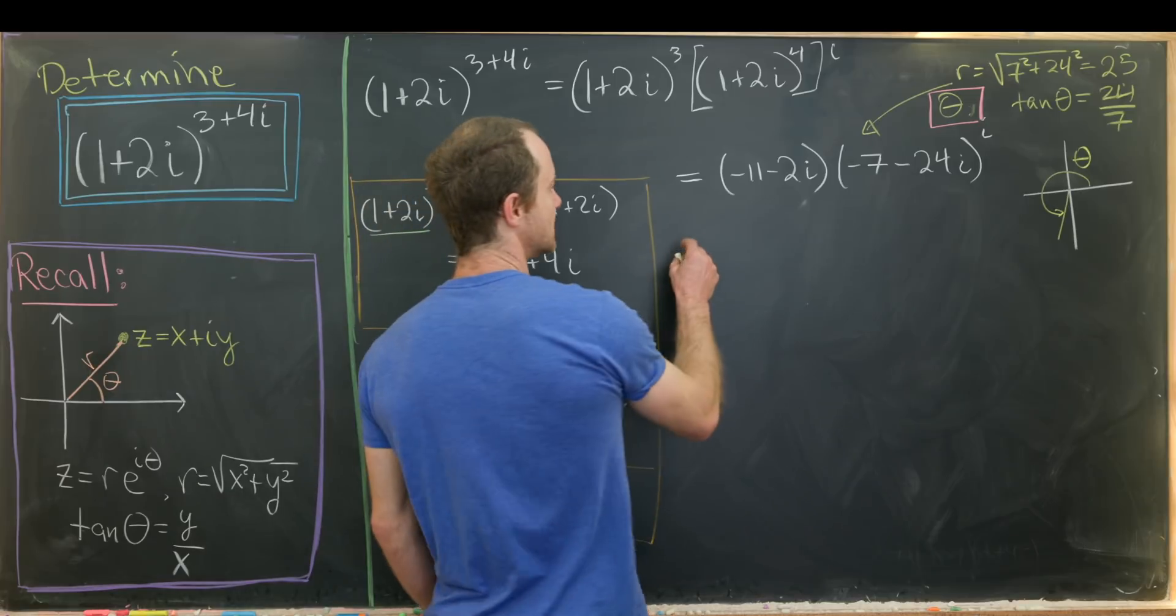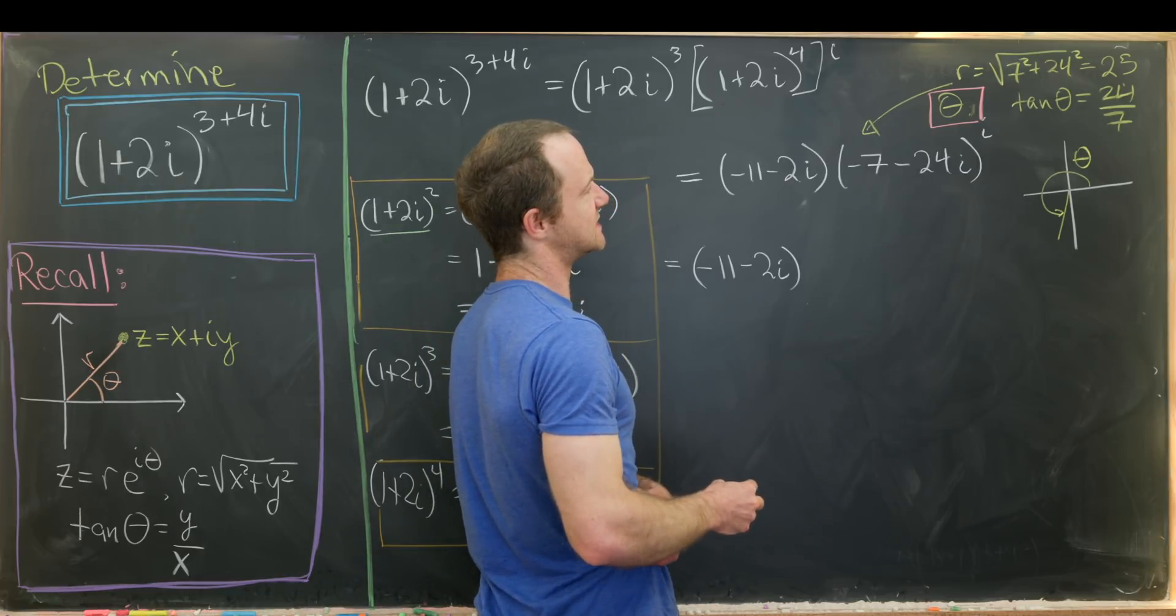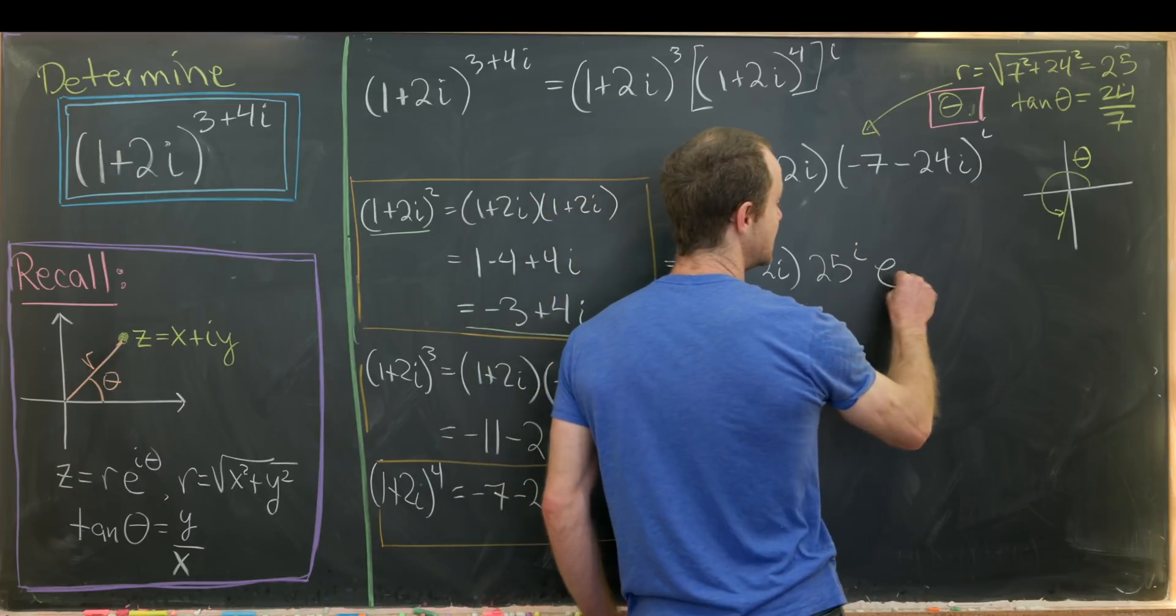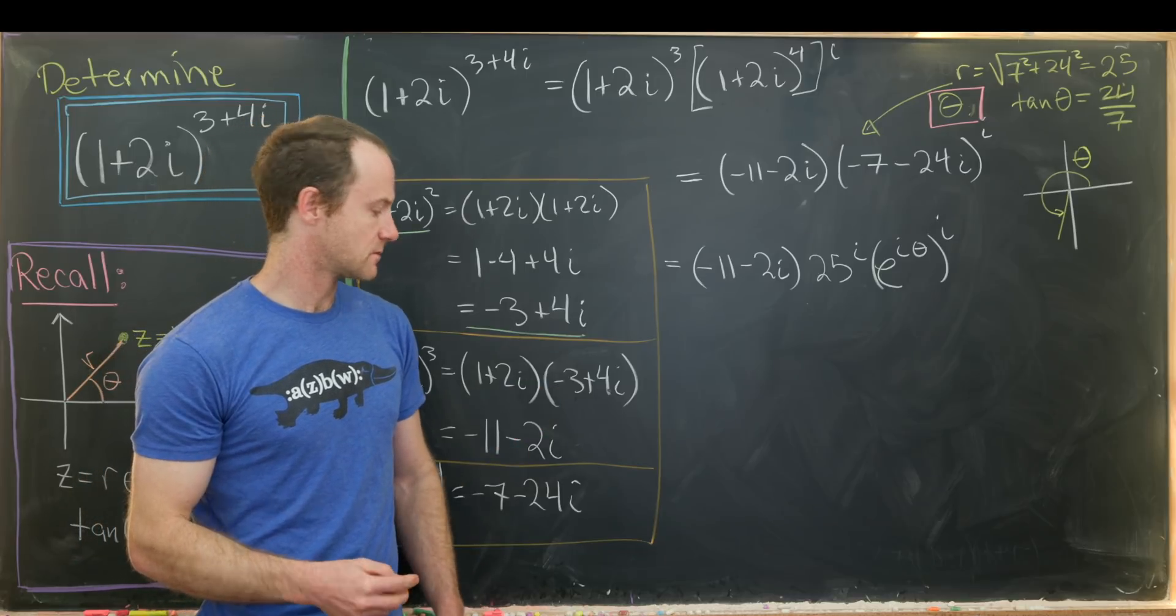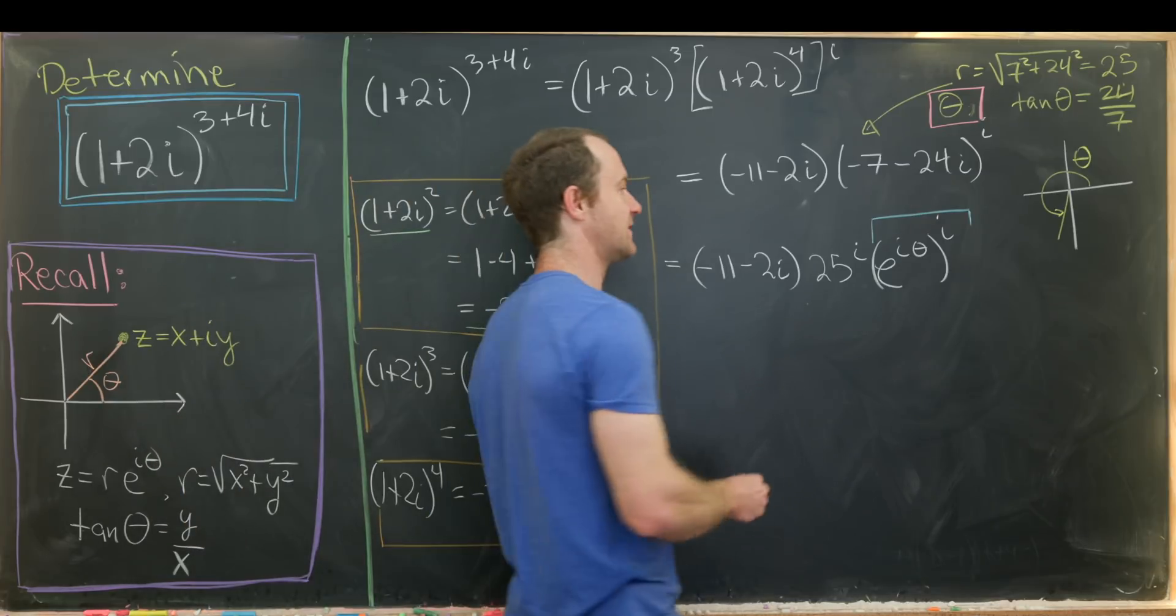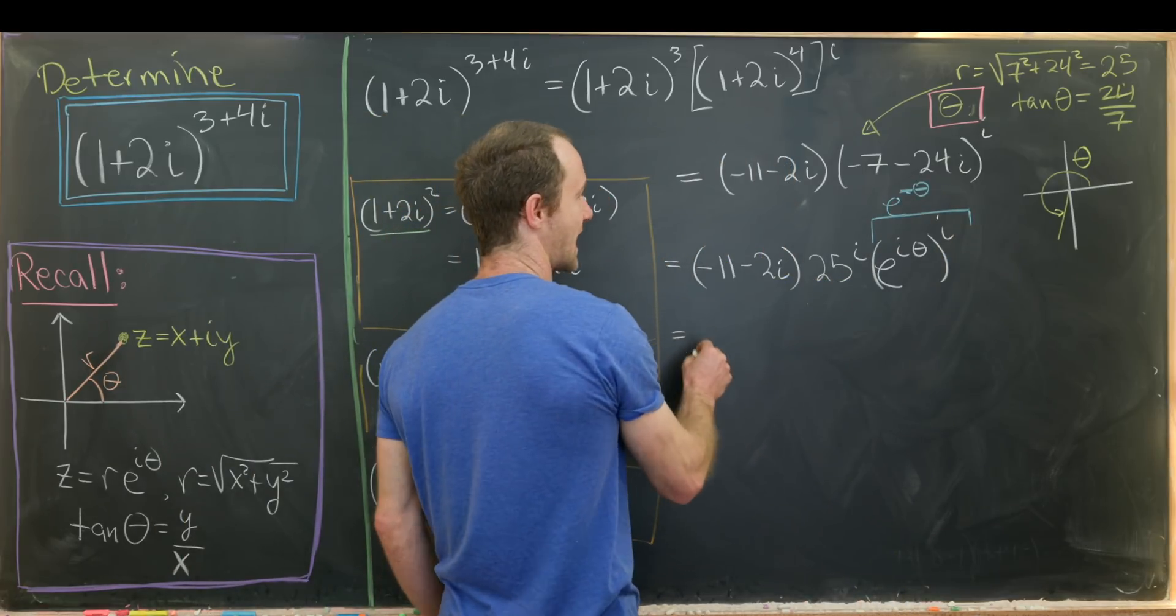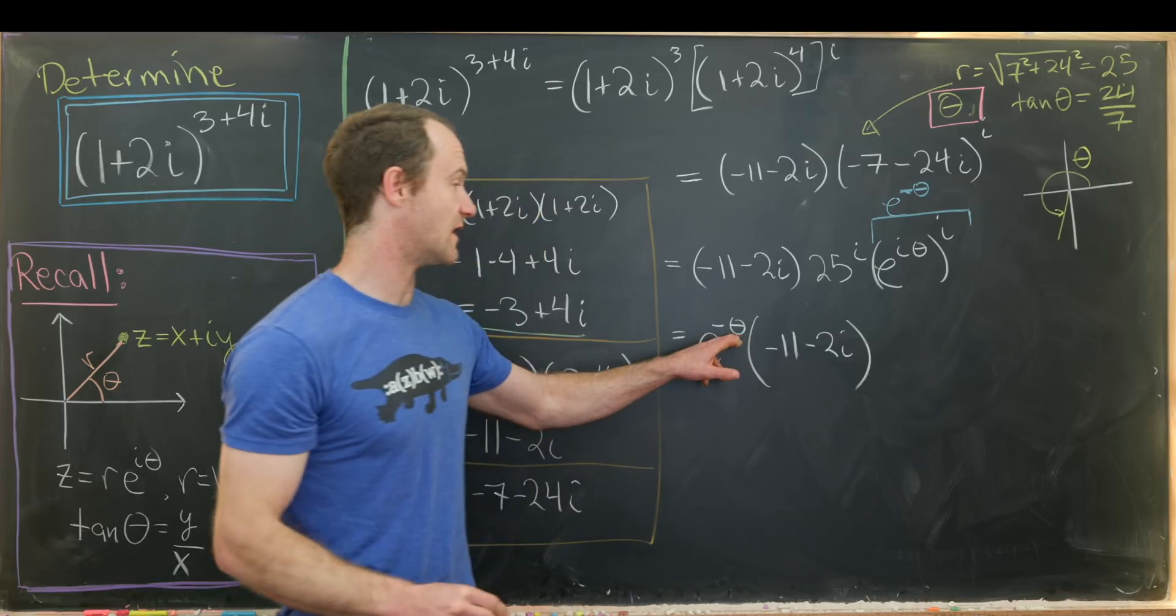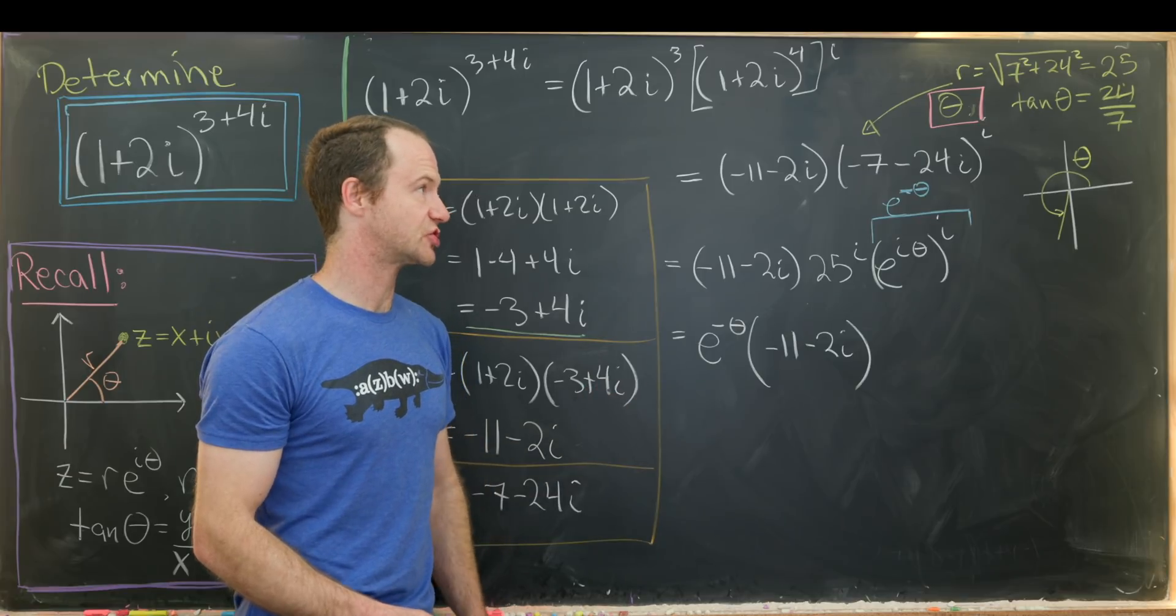So now let's go from there. So we have this is negative 11 minus 2i. And now we have 25 to the i times e to the i times theta all raised to the i power. But using exponent rules, we can simplify this thing right here. And that simplifies to e to the minus theta because we have e to the i squared. So that's a real component. We can bring that out. We have e to the minus theta times minus 11 minus 2i. Just keeping in mind that this theta is the angle over here in the third quadrant, so that tangent of theta is equal to 24 over 7.